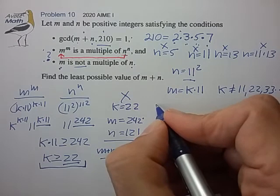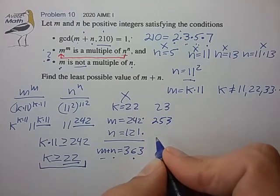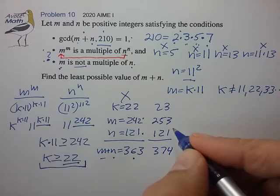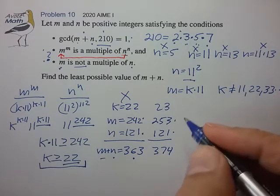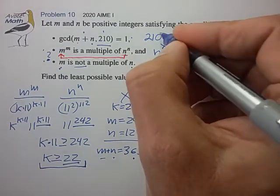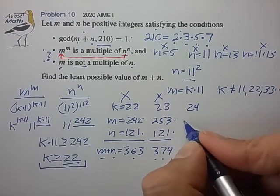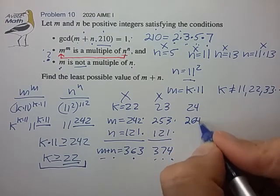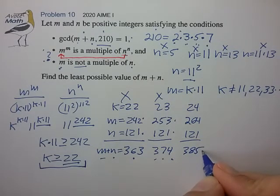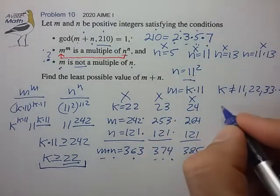Let's try the next one up. k is 24, m is equal to 264, n is equal to 121, the sum 385. We still have a problem. This shares a factor of 5 with 210, so that's no good. Let's try k is 25. For 25, m is 275, n is 121, the sum is 396. All right, this has a problem. Again, it has a factor of 3 and 2 that it shares with 210, so that's no good.